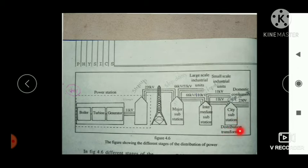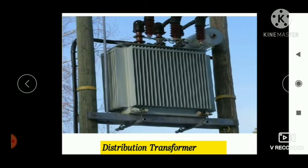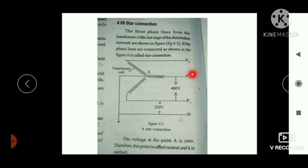From city substations, 11kV is converted to 230V using a step-down distribution transformer, and this 230V is supplied to household electric circuits. The distribution transformer has four wires: three phase lines and one neutral line.